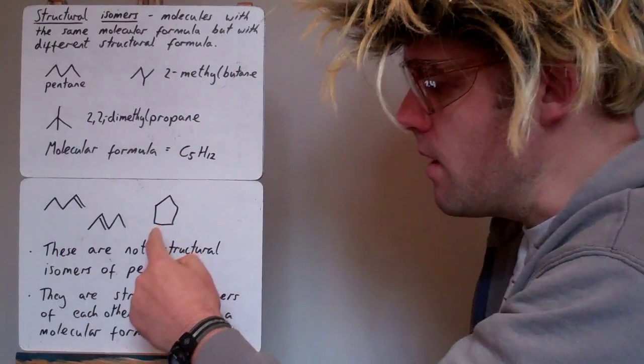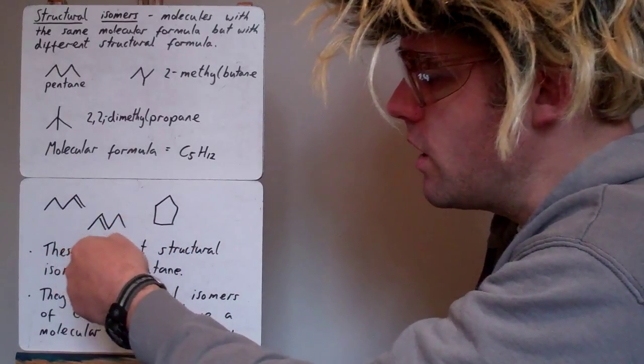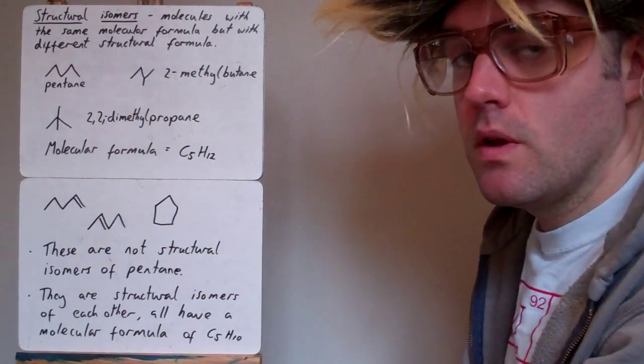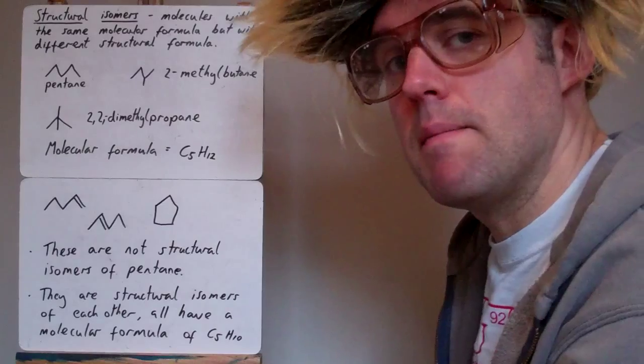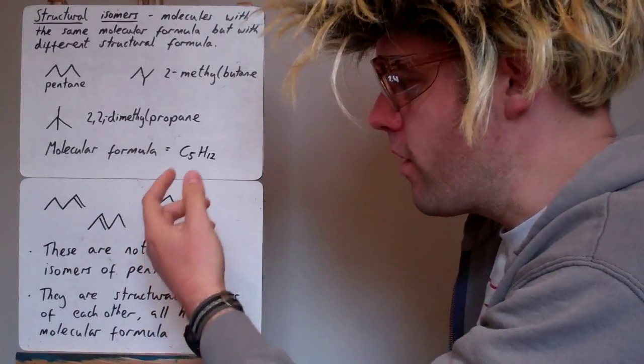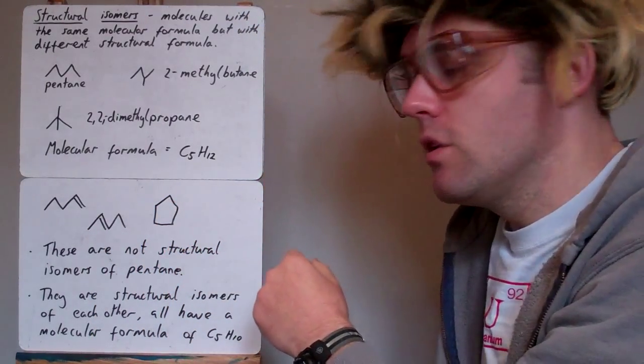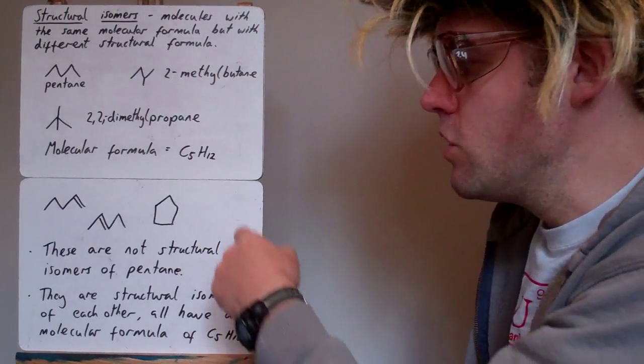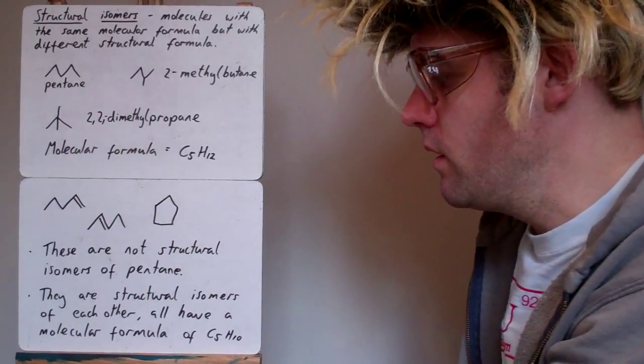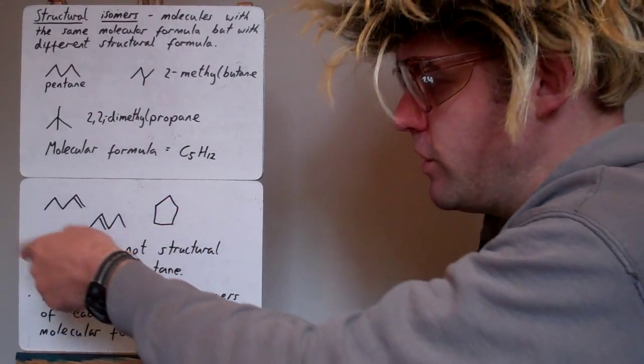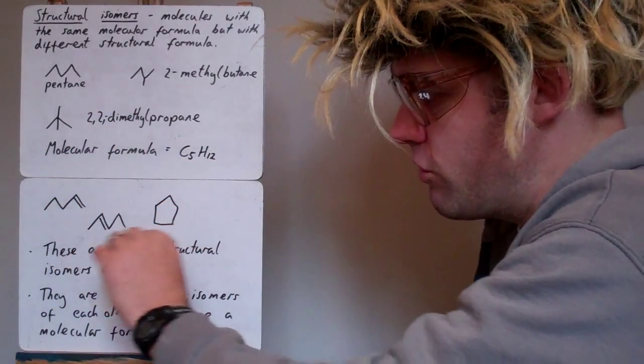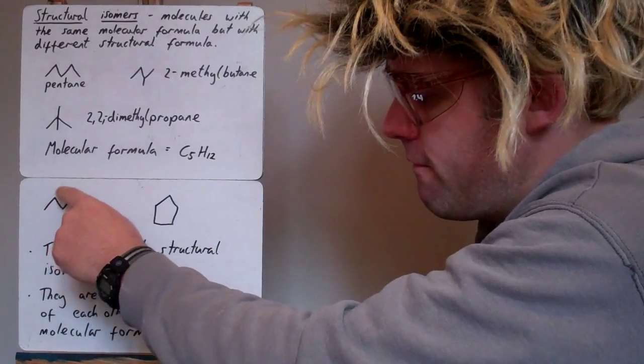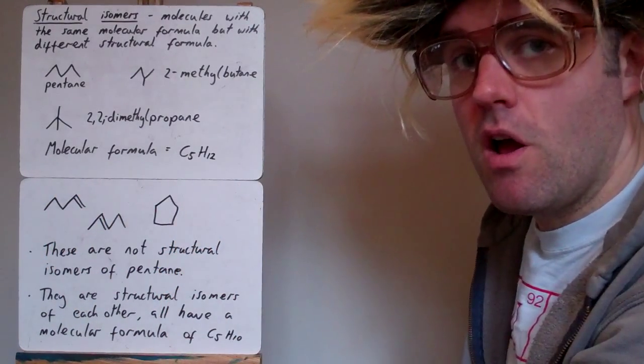If you look at these three here, these three are not structural isomers of these ones. A common mistake is thinking you need the same number of carbons. These have 5 carbons, yes, but they do not have 12 hydrogens. These actually have 10 hydrogens. So they're not structural isomers of pentane but they are structural isomers of each other. This is a different group of structural isomers here because they all have 5 carbons and 10 hydrogens.